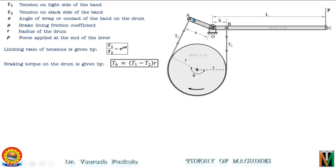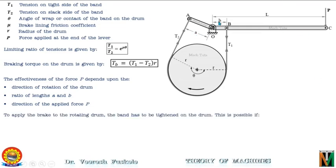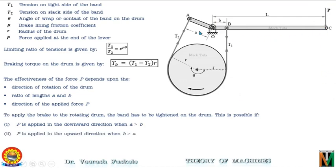In the differential band brake, the band is not connected to the fulcrum as in the case of simple band brake. So, the effectiveness of the force P depends upon the direction of rotation of the drum, the ratio of the lengths A and B, and the direction of applied force P. Depending on the configuration of the differential band brake, the force P will be applied either downward or upward depending on the lengths A and B. To apply the brake on the rotating drum, the band on the drum should be tightened. This is possible if force P is applied in the downward direction when A is greater than B, and force P is applied in the upward direction when B is greater than A.